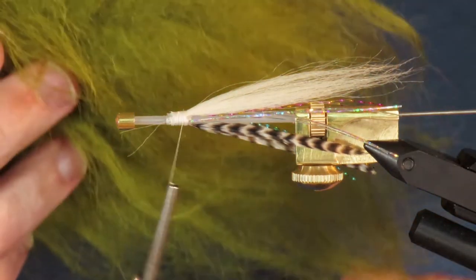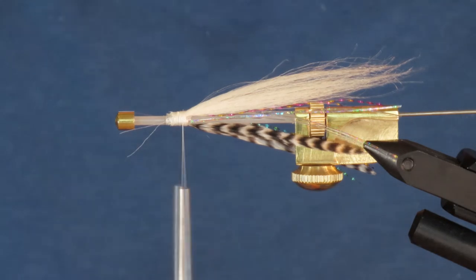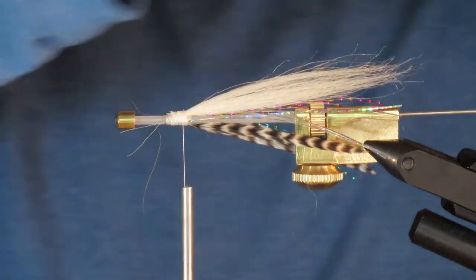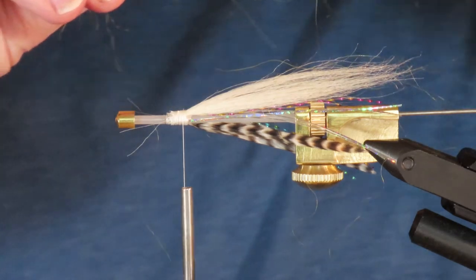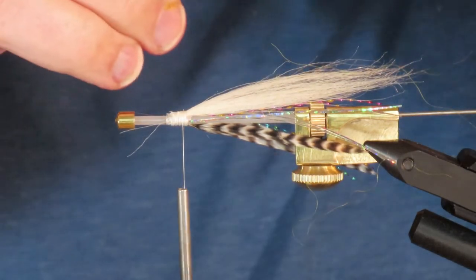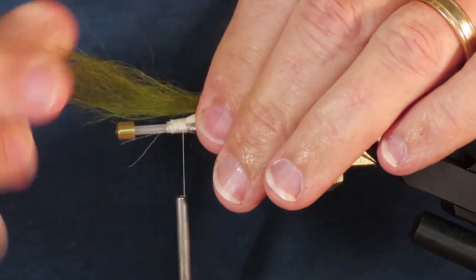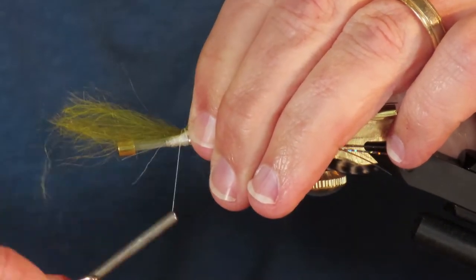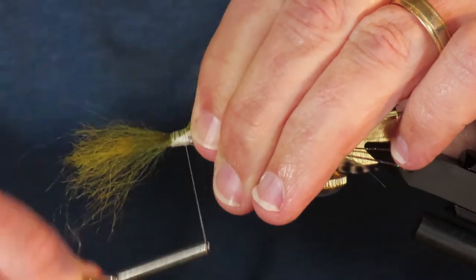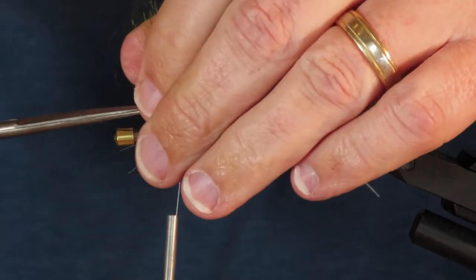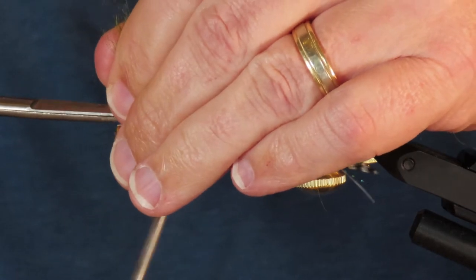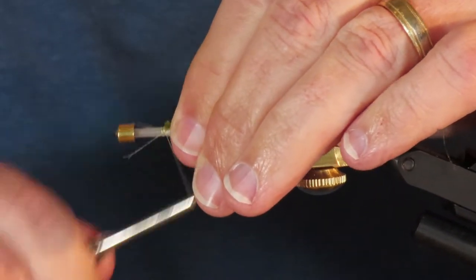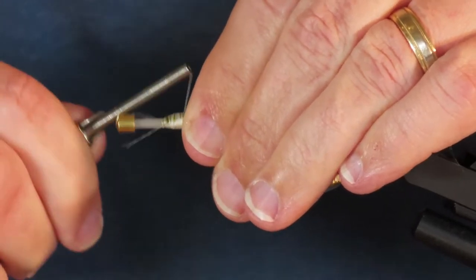On top of that I'm going to add a slightly smaller amount of olive green Icelandic sheep. Moistening this stuff slightly is going to help you gauge the taper. Again I'm just going to tie this right in on top of the white. If it all starts to look a bit messy and bulky, don't worry because you'll just be covering this up. Just make sure it's all tied securely down.